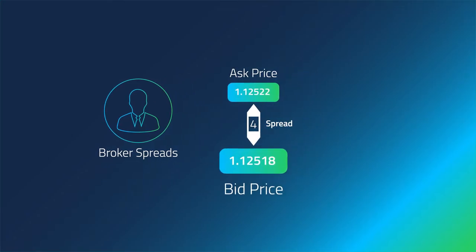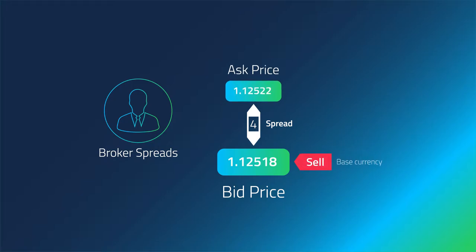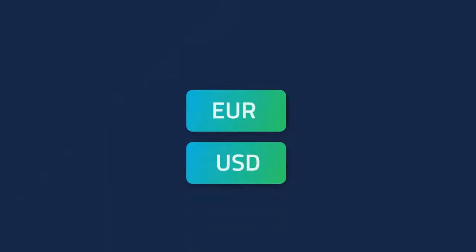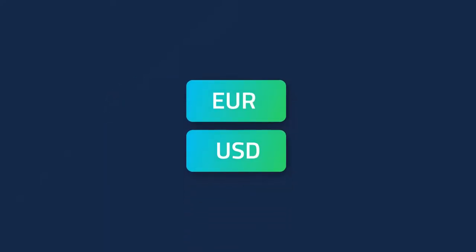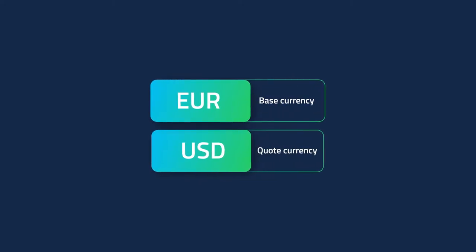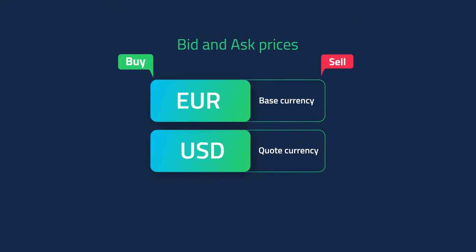Bid price is the price at which you can sell the base currency, while ask price is the price at which you can buy the base currency. If you're trading EURUSD, EUR is the base currency and USD is the quote currency. You can buy or sell the base currency against the quote currency at the bid and ask prices.